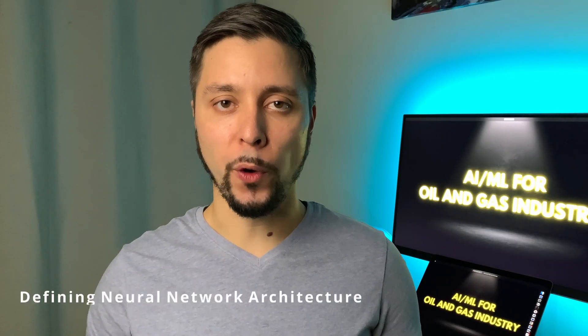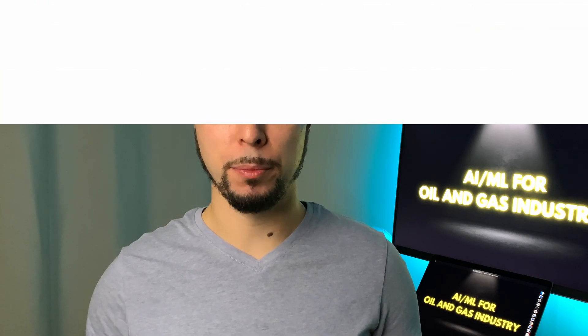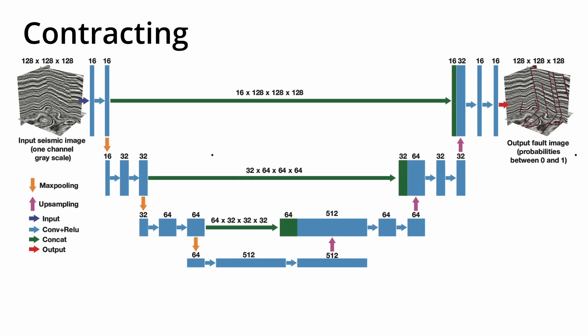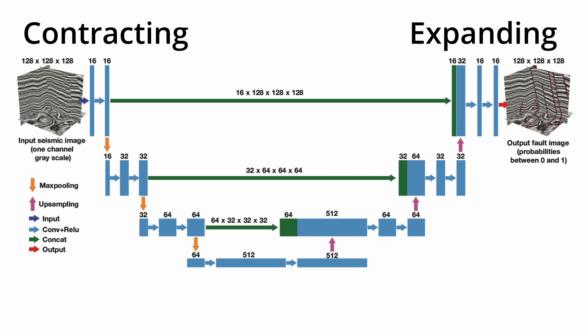We need to understand what U-Net architecture is. U-Net was introduced in 2015 by Ronneberger for biomedical image segmentation. It consists of two parts: one contracting and one expanding, giving it a U-shaped look. The contracting path consists of repeated convolutions with ReLU and max-pooling operations, where spatial information is reduced while feature information is increased. The expanding path uses spatial, feature, and high-resolution information to reconstruct a segmentation.